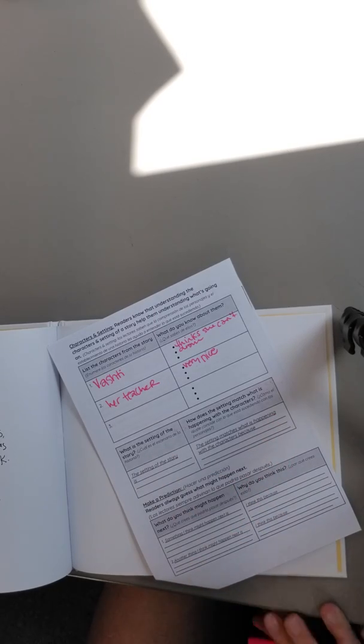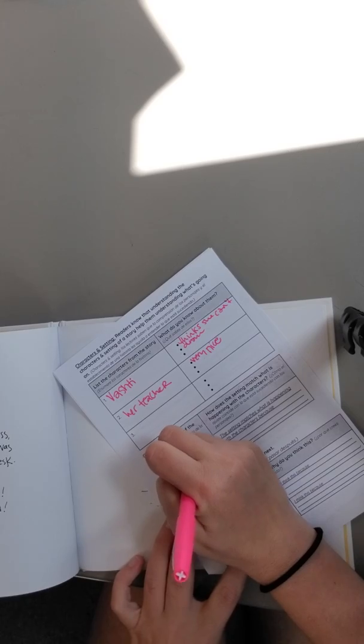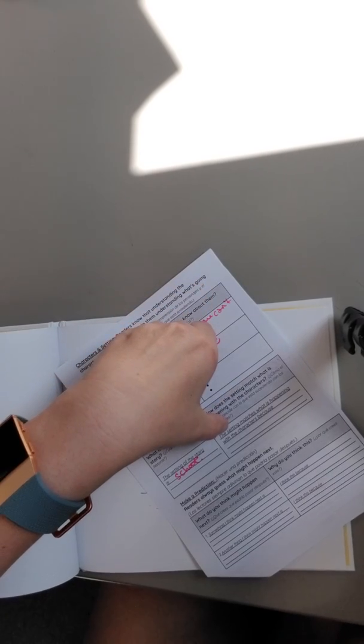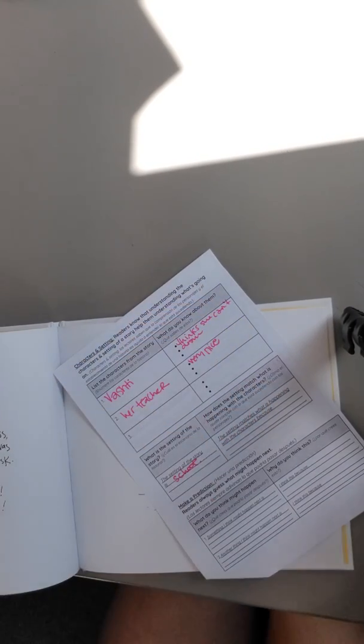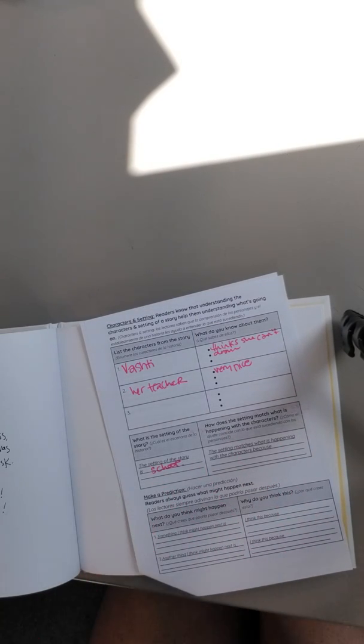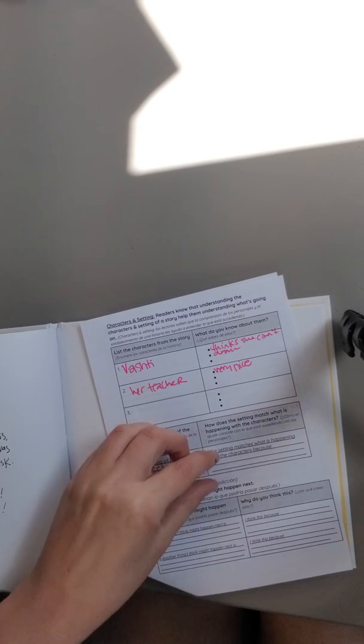What is the setting of the story? Setting of the story is school, right? So then the next question says, how does the setting match what is happening with the characters? And my sentence starter says, the setting matches what is happening with the characters because blank. So think about it like this. She's at school and her teacher is helping her with her art. We know teachers and students, they work together when they're at school. If she was at the mall, if she was at the beach, if she was at a roller coaster, would that make a lot of sense? Probably not. Because we know that teachers and students, they work together in school. And so that's why the author picked that setting. Why do you think that's important? Why do you think it matches? So that's what you're going to write in this blank.